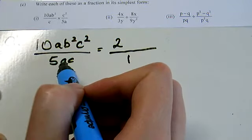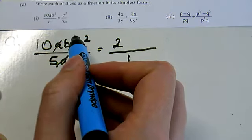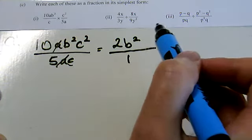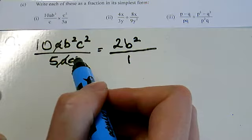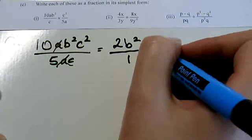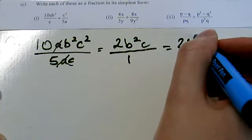A divided by A, that's going to cancel out because there's the same power of both. On the top I've got b squared, and I've got no b's on the bottom, so that just leaves b squared. On the top here I've got c squared, and on the bottom just c, so one of those is going to cancel, which leaves me a c on top. Dividing anything by 1 is just itself, so it's just 2b squared c.